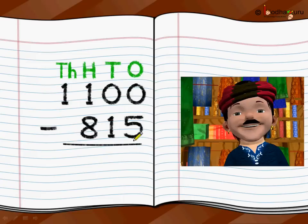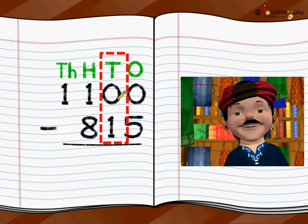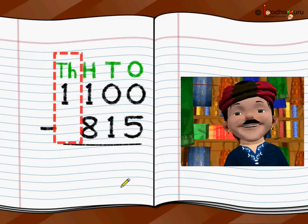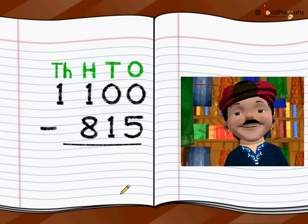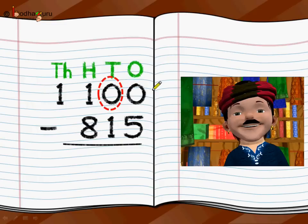Starting from ones position, we subtract. What happens with 0 minus 5? We can't subtract a larger number from a smaller one. The ones position asks its neighbor at the tens to borrow a 10. But the tens neighbor says: I am also a 0, I don't have anything to lend you. So the tens position borrows from its neighbor at the hundreds.